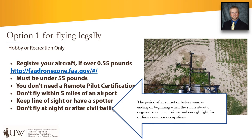Civil twilight is described as the period after sunset or before sunrise, ending or beginning when the sun is about six degrees below the horizon and there is enough light for ordinary outdoor occupations.